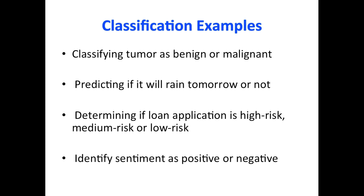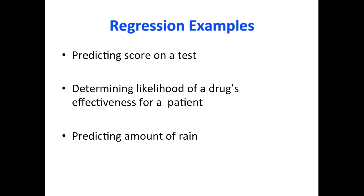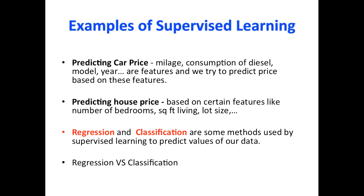Some examples of classification: classifying a tumor as benign or malignant, predicting if it will rain tomorrow or not, determining if a loan application is high risk, medium risk, or low risk, and identifying sentiment as positive or negative. We'll see classification and regression in detail, but I just wanted to give you some examples. Regression and classification are methods used by supervised learning.